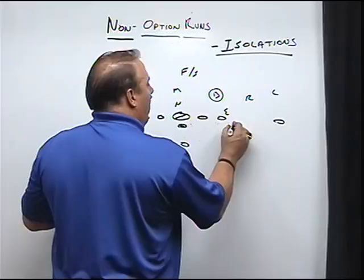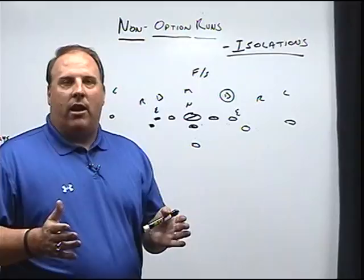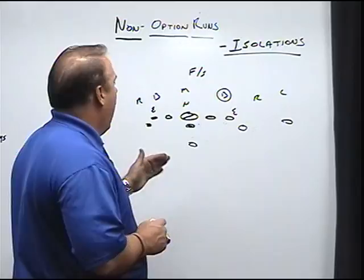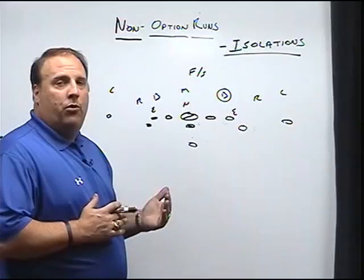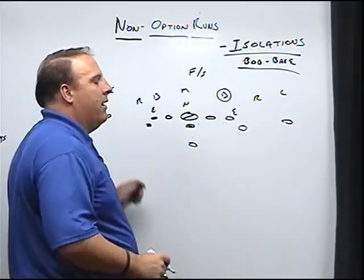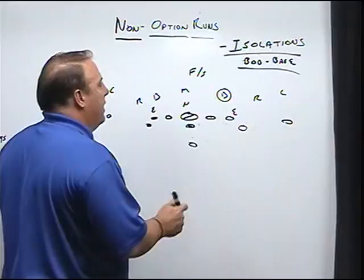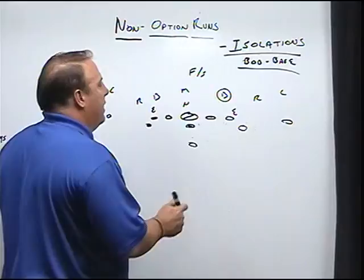There are five isolation plays that we run. The beauty is each has a different backfield action — the teams we play may think it's a different play, but it's one blocking scheme for our linemen. The backfield action is something the backs have to learn. Our rule on isolation is BOB base. On the play side, we're blocking the guard on the first down lineman, the tackle on the second down lineman, and from the center on back we're basing, and the backs are going to isolate the linebacker.